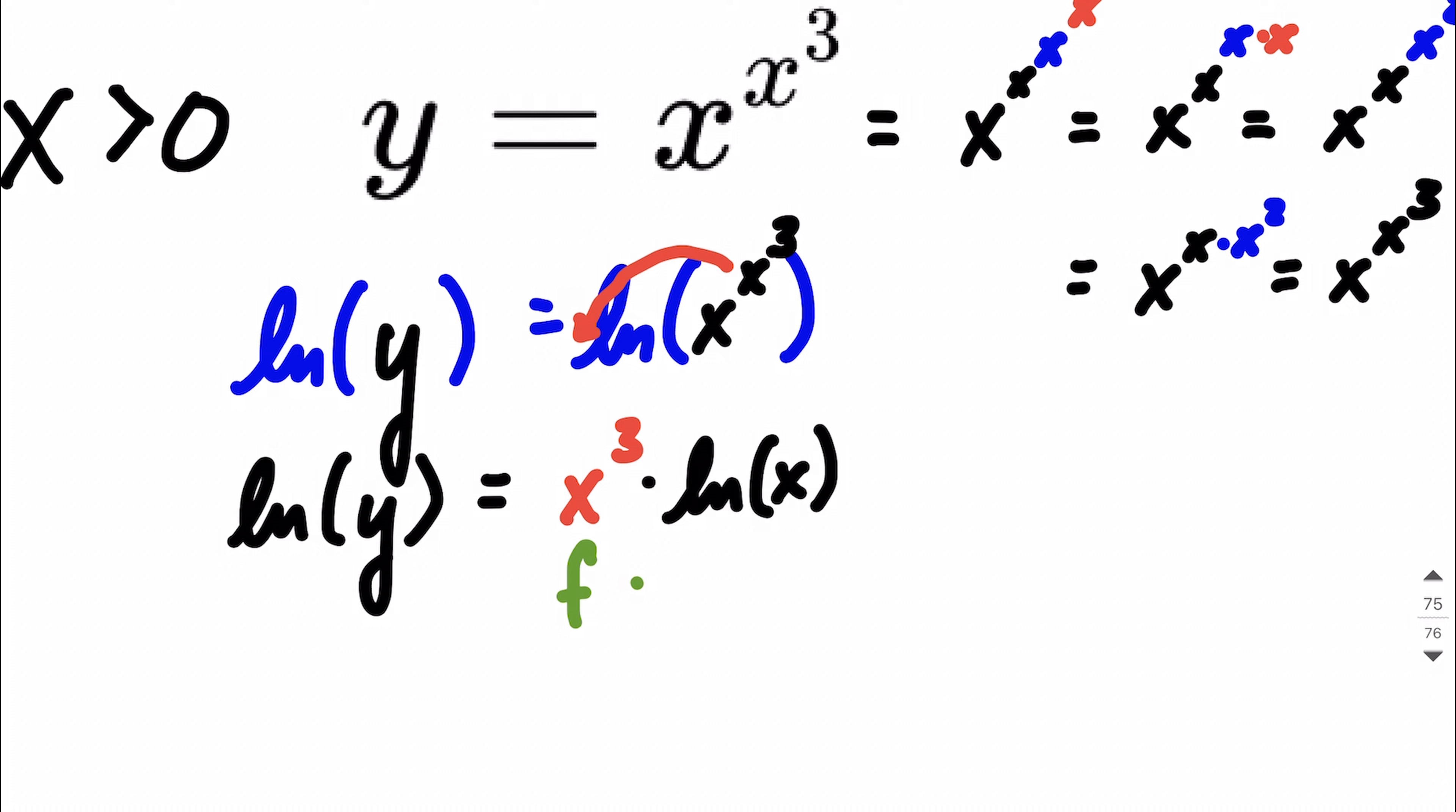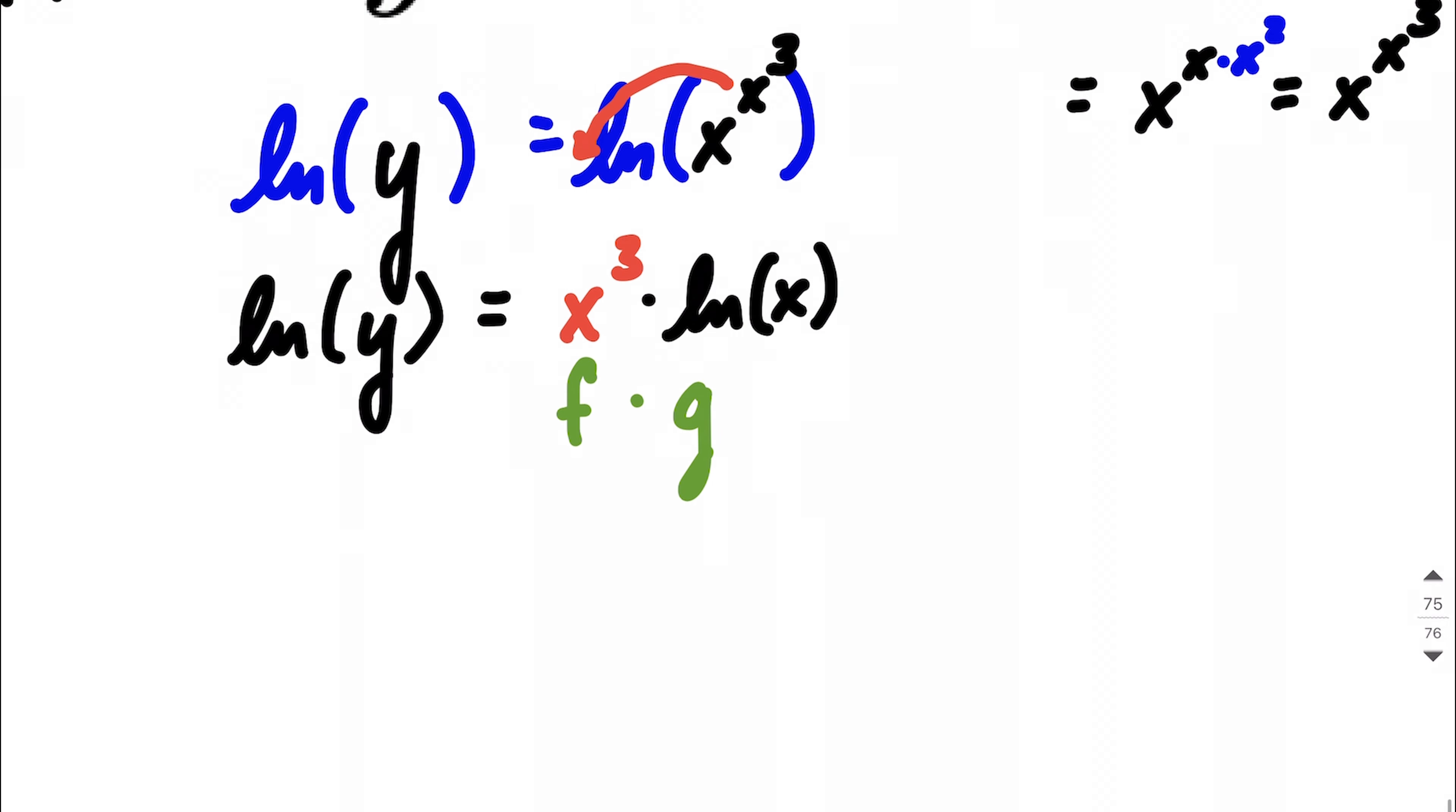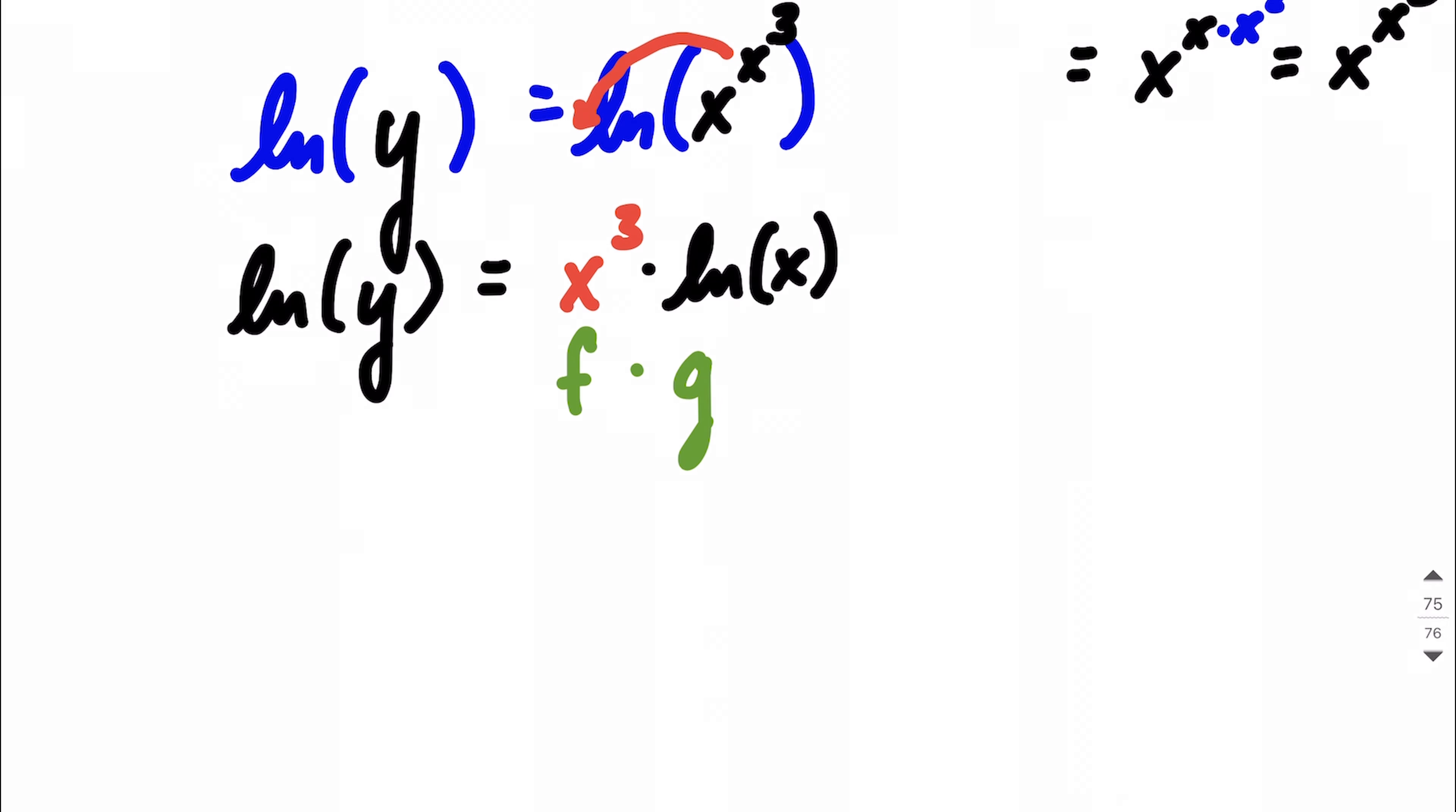So I'm going to think of this first function, x cubed, as the function f, and the natural log as being g. So the plan is going to be, product rule says f prime times g plus f times g prime.